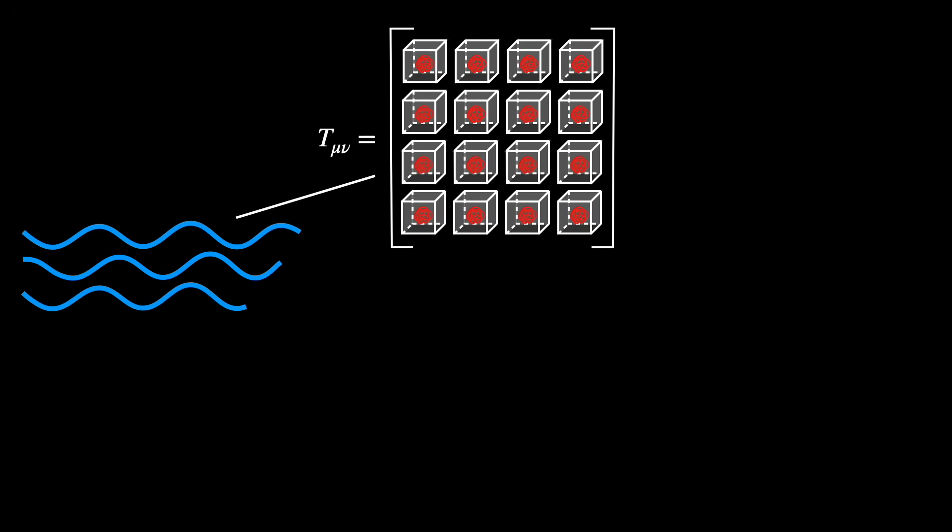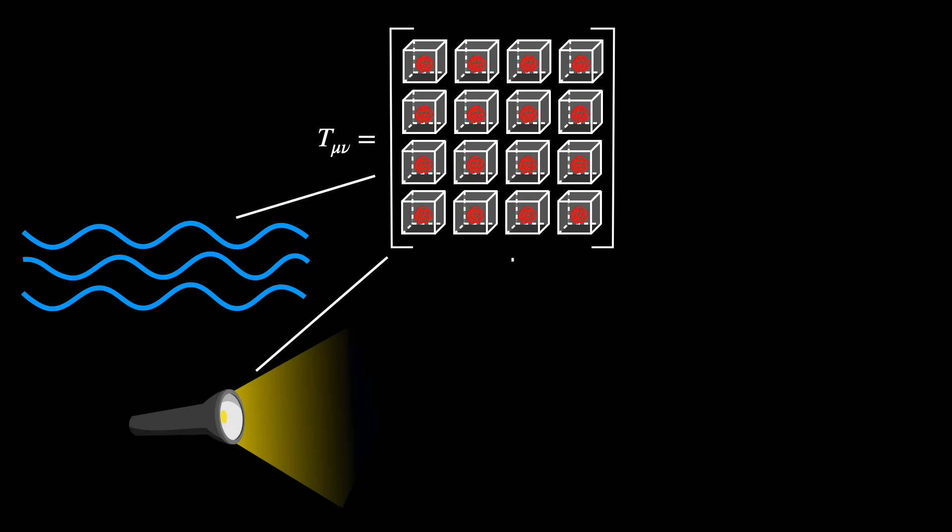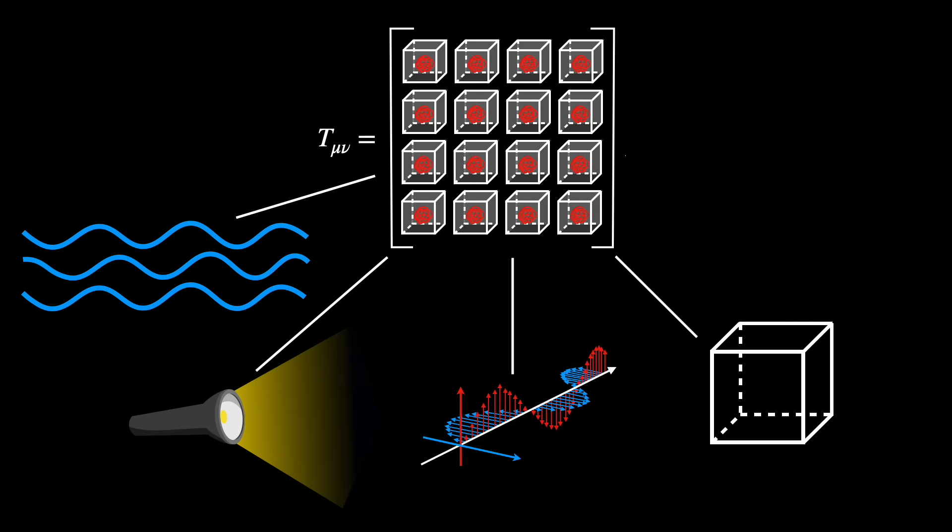It tells you how matter moves, how it pushes and pulls, and how it exchanges energy. This tensor encodes the state of a fluid, a beam of light, an electromagnetic field, or even the vacuum, but always in terms of observables, measurable quantities.